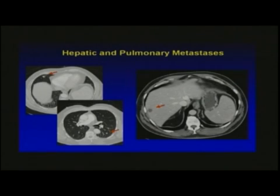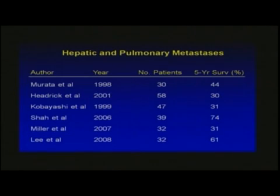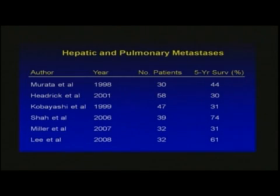Not an uncommon scenario: patients that present with combined liver and lung disease. The data are somewhat relatively limited. These are a variety of retrospective series reporting outcomes in patients with pulmonary and hepatic metastases. You can see five-year survival rates that are arguably comparable — in fact, some are better than reports with liver-only disease. Clearly it reflects patient selection, but it does suggest that the presence of limited, resectable pulmonary metastases should not in itself be an absolute contraindication to proceeding with surgical therapy.